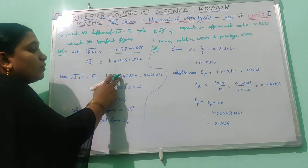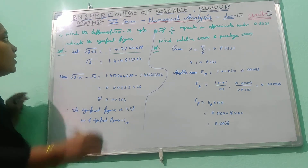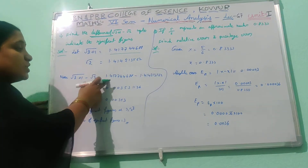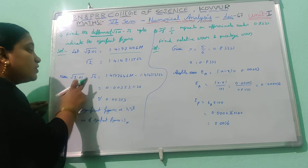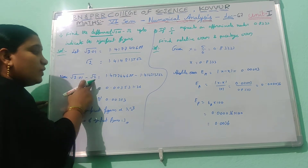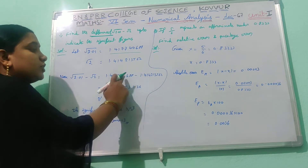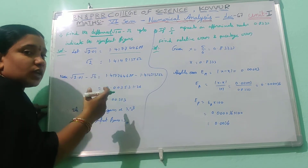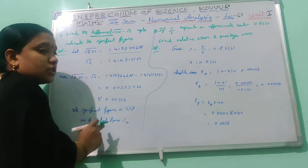So: 1.41417744618 minus 1.414213562. In this problem we are finding the difference. Root of 2.01 value from the scientific calculator minus root 2 value from the scientific calculator. The result is 0.00353126.